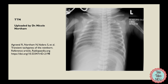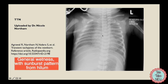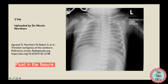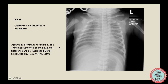Our final x-ray of TTN — let's put all our knowledge together and list what we see. Number one: well-expanded or even hyper-expanded lungs — counting the ribs: 1, 2, 3, 4, 5, 6, 7, 8, 9 ribs expanded. Number two: general wetness all over, especially with a sunburst pattern of excess fluid coming from the hilum. Number three: fluid in the fissure. These are all the classic attributes of TTN. Also notice this x-ray is actually rotated — the ribs appear much longer on one side than the other. As soon as you see ribs much longer on one side, you know the baby is rotated.